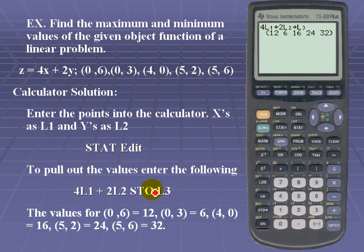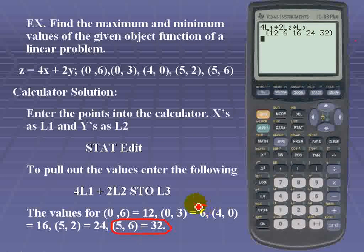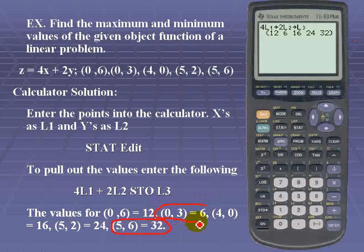So we can see once again, verify on the calculator that there's a maximum at the coordinates (5,6). There is a minimum at the point (0,3).